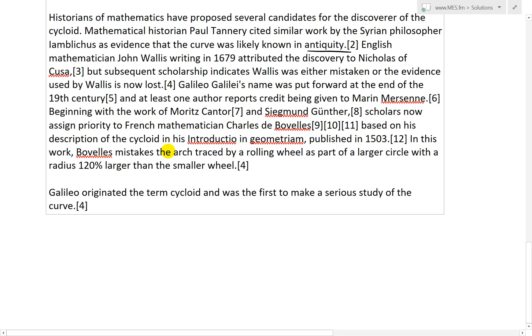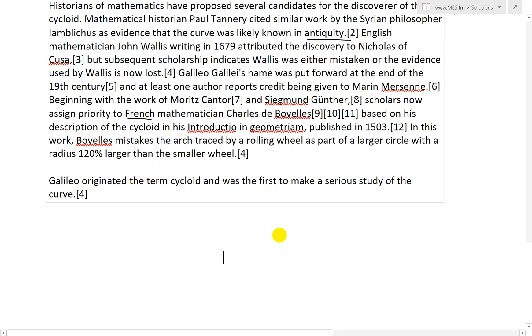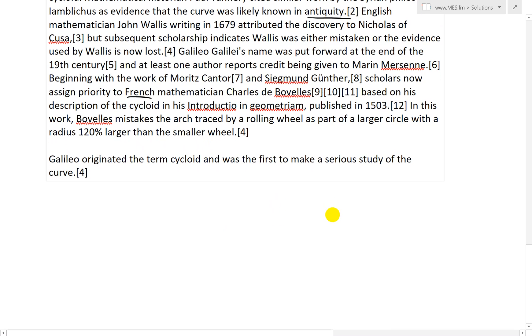Scholars now assign priority to French mathematician Charles de Bouvelles based on his description of the cycloid in his Introductio in Geometriam, I think that's French, published in 1503. In this work, Bouvelles mistook the arch traced by a rolling wheel as part of a larger circle with a radius 120% larger than the smaller wheel. I think he means that it's rolling around another wheel instead of just a straight line, but I think that's pretty much the same thing. I'll have to look at that further. But anyways, Galileo originated the term cycloid. He was the first one to actually say that it's cycloid and was the first to make a serious study of the curve.